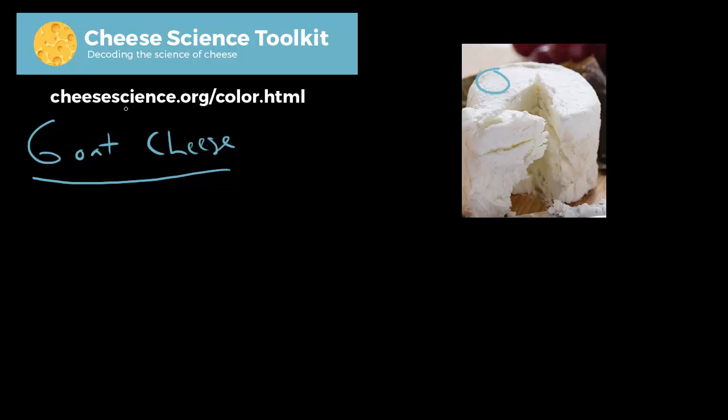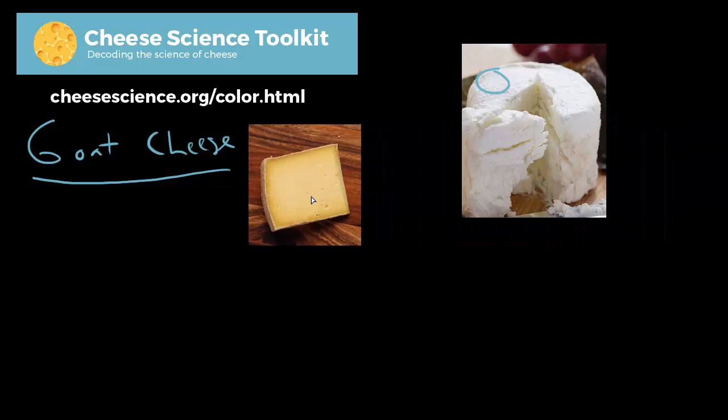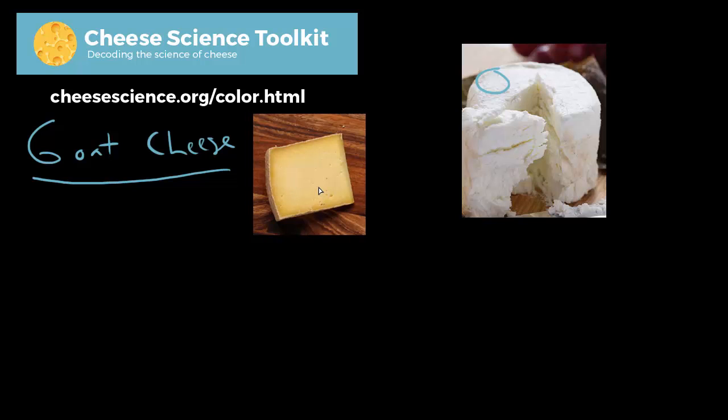Before we dive into that head first, just a quick recap of what we talked about last time and why cheeses like this, this is just a cheese from a cow that was fed a lot of grass, why cheeses like this are really yellow and where that color is coming from on a chemical basis.